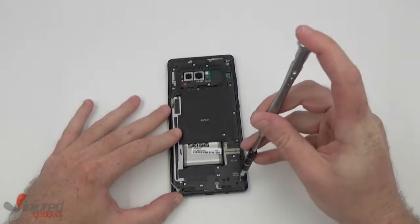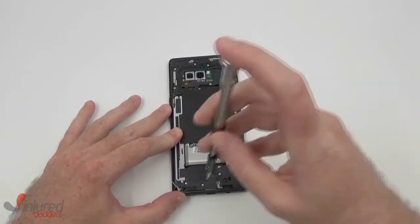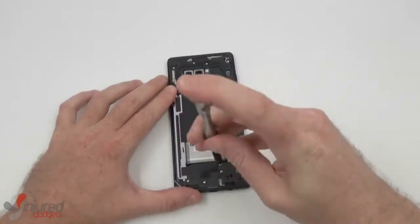Now that the glass back is off, we can remove the screws holding the mid-frame together.